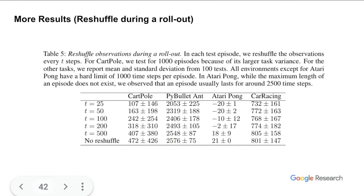Here we show the agent's performance when we reshuffle observations every T steps during the rollout. As a general trend, the more frequently we reshuffle, the poorer the performance, due to the extra time the agent spends on input identification at each reshuffling event.